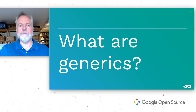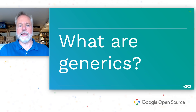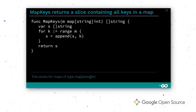Functions and types with type parameters can then be instantiated with type arguments. We say instantiated rather than called, because the operation occurs entirely at compile time, not at runtime. Type parameters have constraints that restrict the set of permitted type arguments, much as ordinary parameters have a type that restricts permitted arguments. Consider a function that takes a map and returns a slice containing all the keys. In current Go, you need to write a different copy of the function for each map type, or use the reflect package, which is awkward and relatively slow.